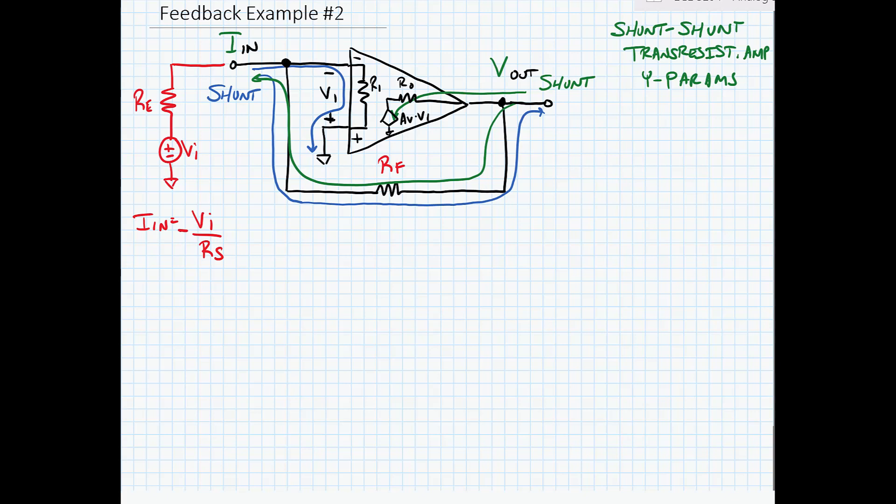Alright, so let's start by calculating Y12 which is beta. Alright, so Y12 is equal to beta is equal to I1 over V2 when V1 is equal to zero. So here we're going to place a voltage source V2.